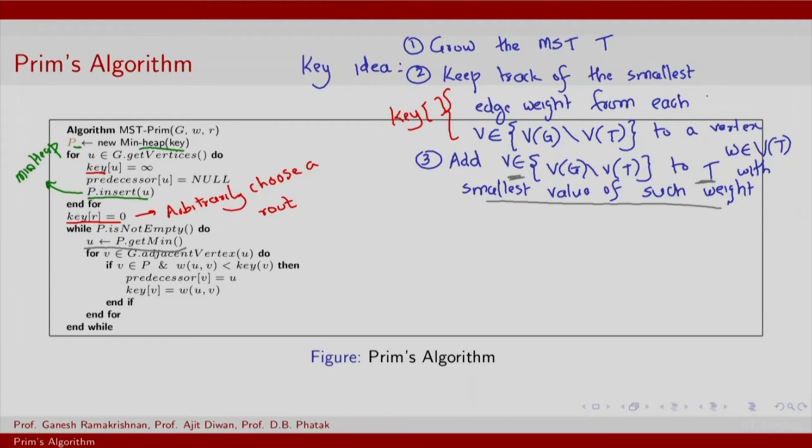However, once we have identified the next node to add, and initially you will actually add root R, you are also going to update the key values for nodes or vertices that are adjacent to you. This step, which iterates over all the adjacent vertices, basically corresponds to the step of updating the key array, and this is done for adjacent vertices to you.